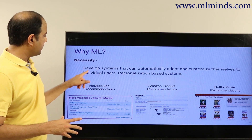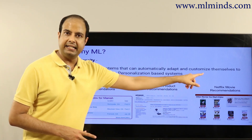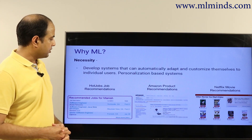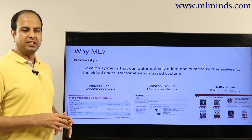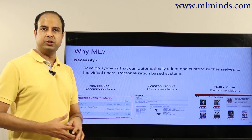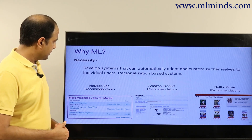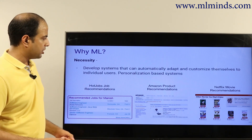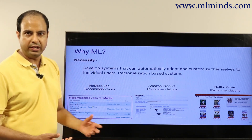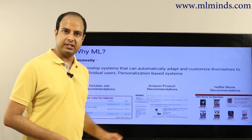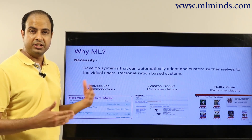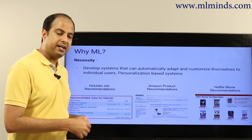Machine learning is also necessary for developing systems that can automatically adapt and customize themselves to individual users. Such systems are called personalization-based systems, and they include personalized search, personalized recommendation systems, and personalized ads. These are recommendations on job portals, on Amazon, on Netflix — jobs, products, and movies recommended in a personalized way based on your history or based on what similar users have bought.